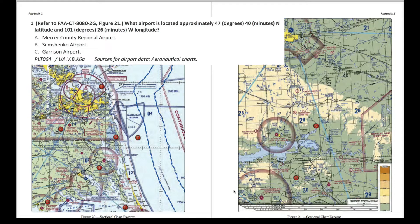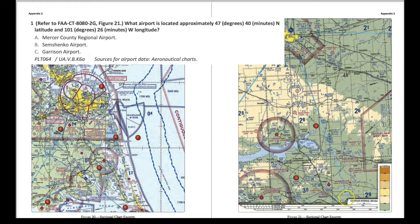In this question, it refers to Figure 21. I've left the diagram zoomed out a little bit because I want to show you something the FAA does when they ask these questions — they give you only a portion of a sectional chart. It's easy when you have a big sectional chart folded out and you can see all of the latitude and longitude lines, but when you can only see a portion of it, it requires you to interpolate where 47 degrees and 100 degrees are, because they've only given you two numbers.